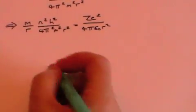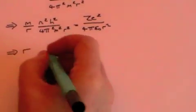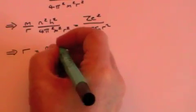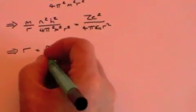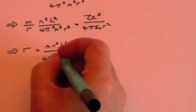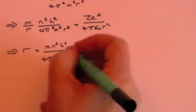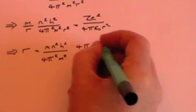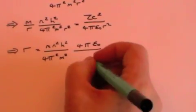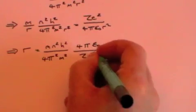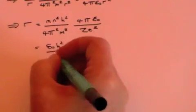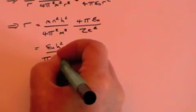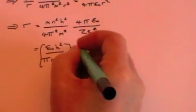And from that, we can work out what r is. r equals n squared h squared over 4 pi squared m squared times 4 pi epsilon over z e squared, which is epsilon naught h squared over pi m e squared times n squared over z.